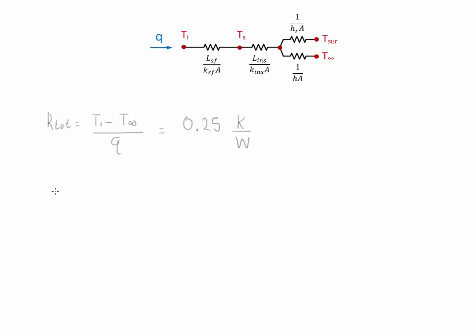The total resistance can be calculated by adding the four different components in this problem. Therefore, the total resistance is the conduction resistance in the skin-fat layer plus the conduction resistance in the insulation layer.